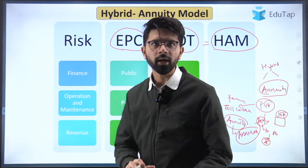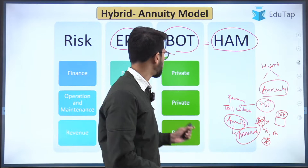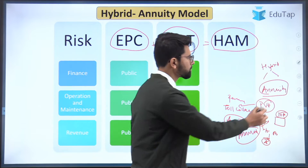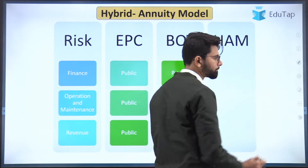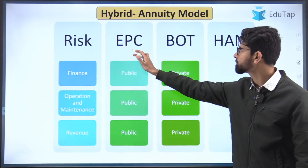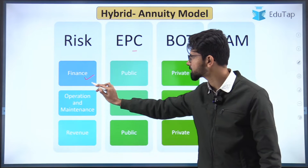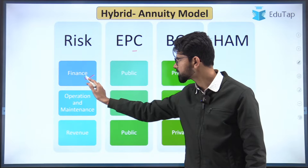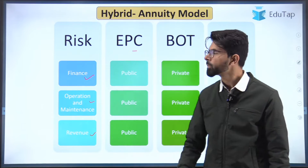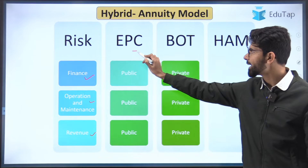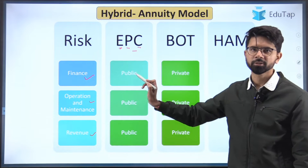We will understand how this is an advantage after understanding the EPC model and the BOT model. So first, what is the EPC model? We will understand it with respect to three risk components: finance, operation and maintenance, and revenue. EPC stands for engineering, procurement, and construction.